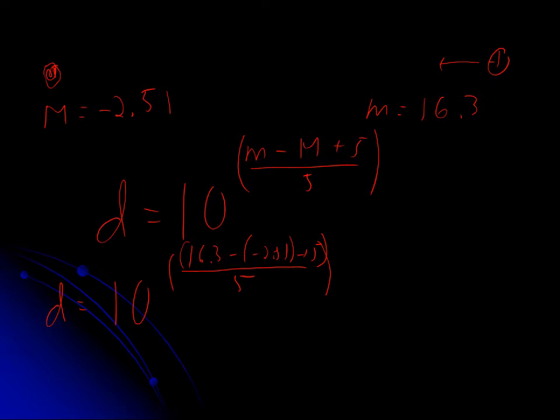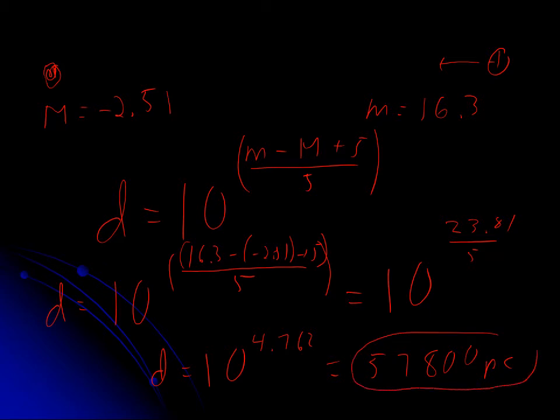So 16.3 minus a negative - that's plus 2.51 plus 5. This becomes 10^(23.81/5). 23.81 divided by 5 is 4.762, and 10 raised to that quantity turns out to be 57,800 parsecs. The answer always comes out in parsecs.